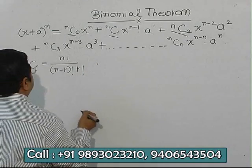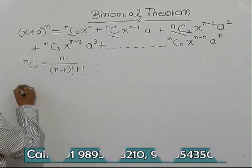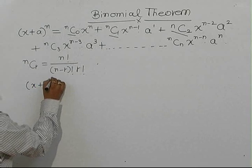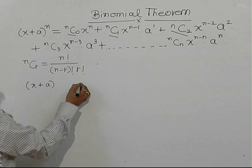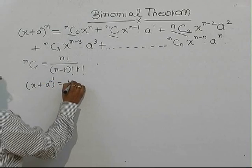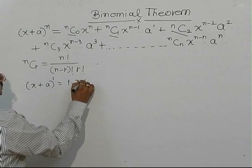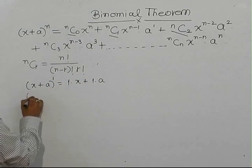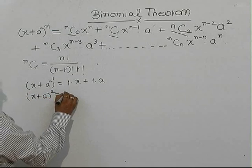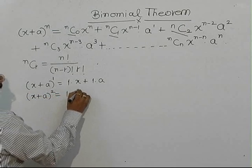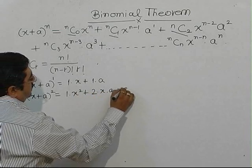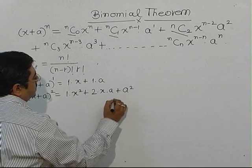One shortcut I am giving you. For (x + a)^1, it is simply 1·x plus 1·a. For (x + a)^2, it is 1·x² plus 2x·a plus 1·a².